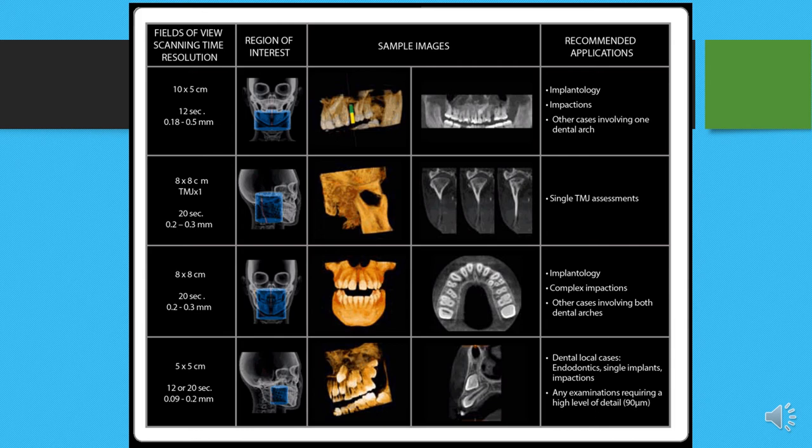The significance of FOV selection is twofold: first, we are able to select specifically the area we want to image; and second, because we are limiting the field, the exposure time for the patient is reduced. The lower the time of exposure, the lower the radiation dose received by the patient.